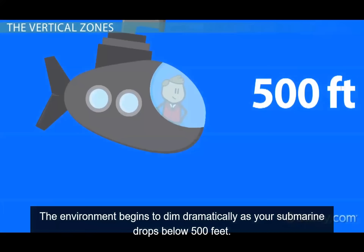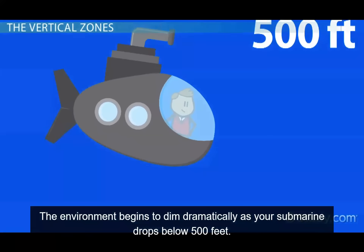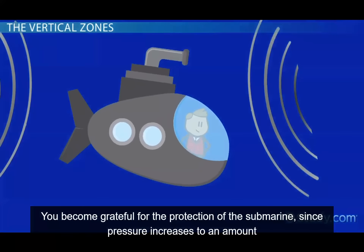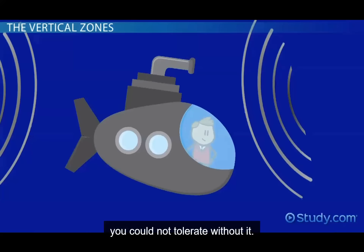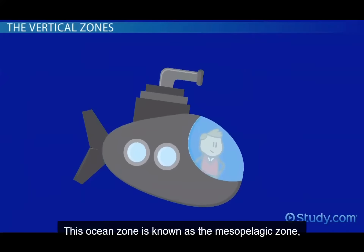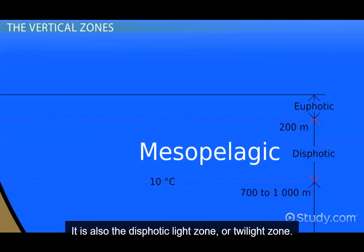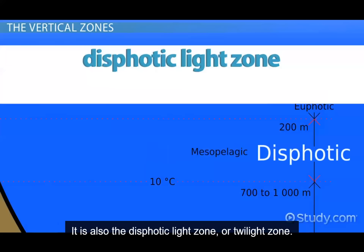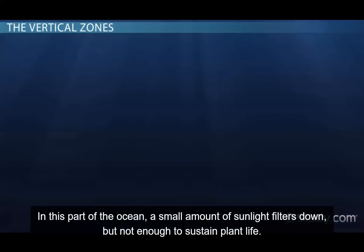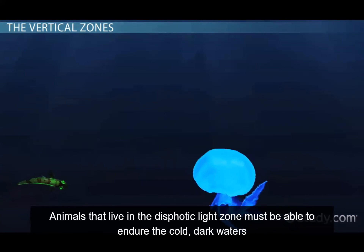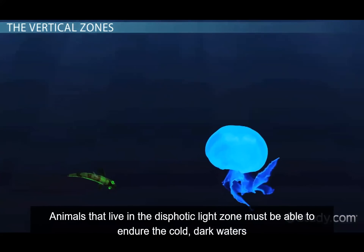The environment begins to dim dramatically as your submarine drops below 500 feet. You become grateful for the protection of the submarine, since pressure increases to an amount you could not tolerate without it. This ocean zone is known as the mesopelagic zone. It reaches from 500 to 3,280 feet below the surface. It is also called the dysphotic light zone, or twilight zone. In this part of the ocean, a small amount of sunlight filters down, but not enough to sustain plant life. Animals that live in the dysphotic light zone must be able to endure the cold, dark waters and increased pressure.